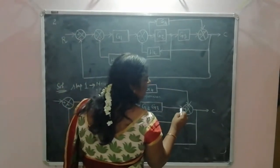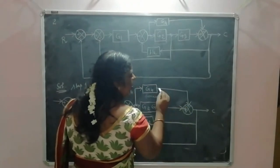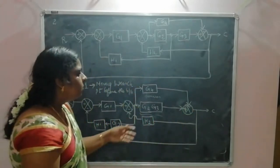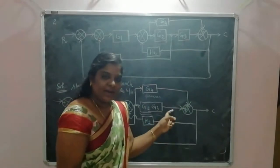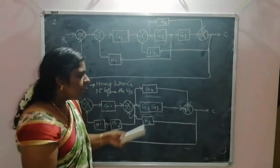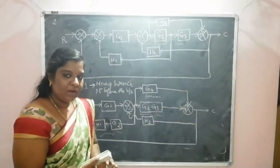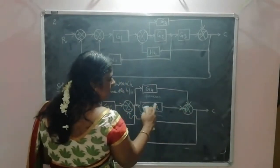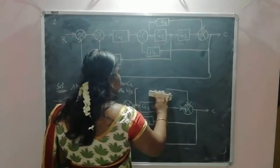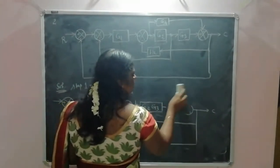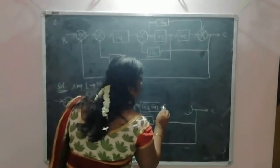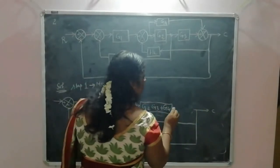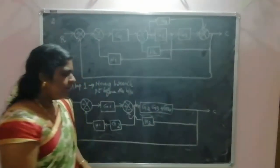This forward path is connected to the summing point, and the arrow is pointing toward the positive polarity — this is a parallel connection. So we can eliminate this using Rule 2, that is combining the parallel blocks. We can write this combined result as G2·G3 plus G4, replacing those two blocks with G2(G3 + G4).